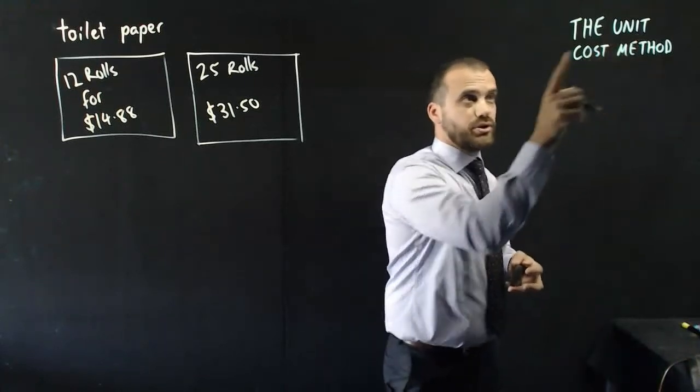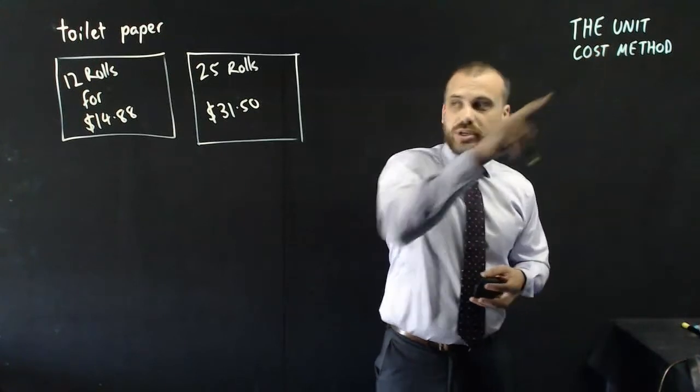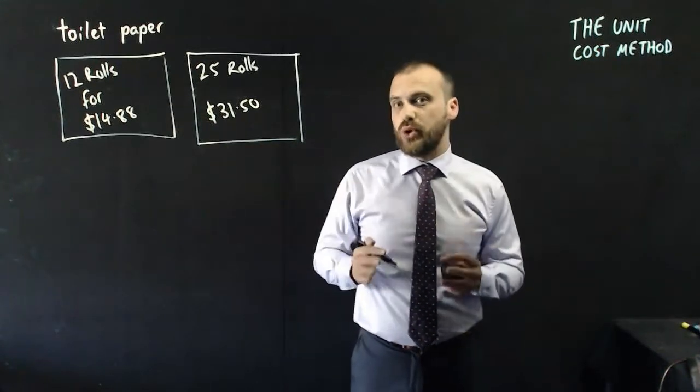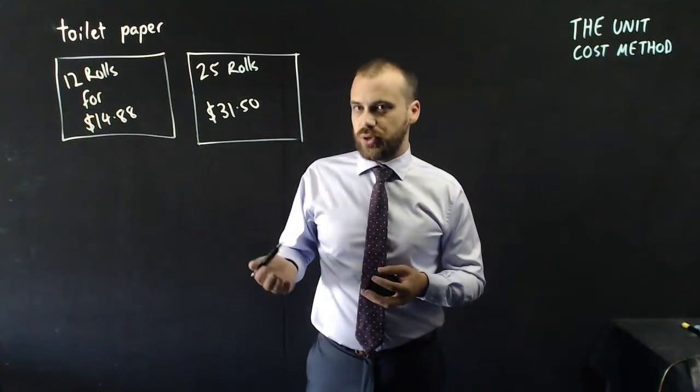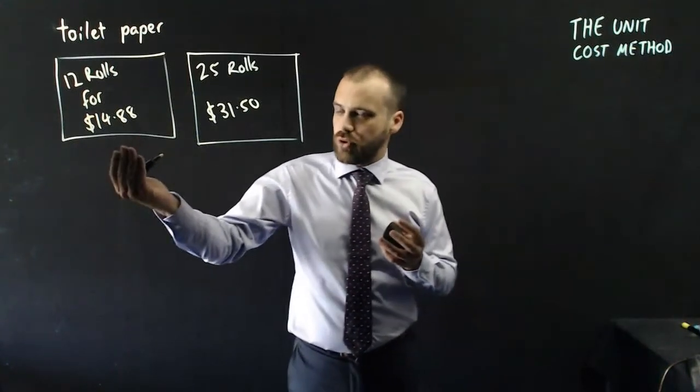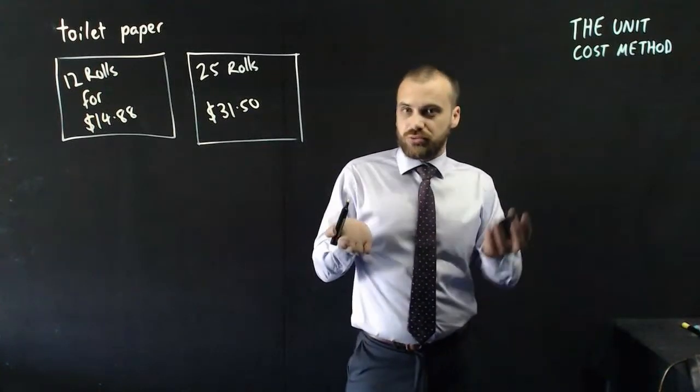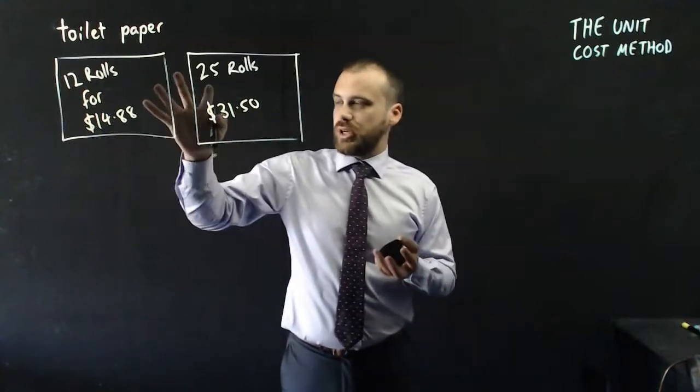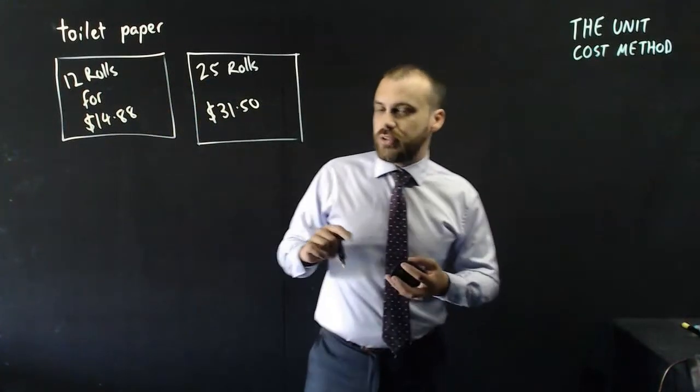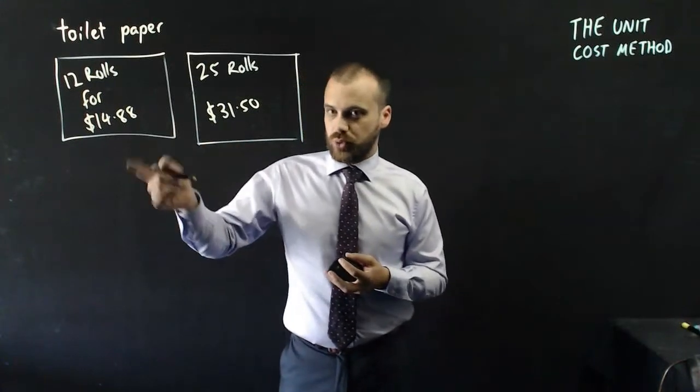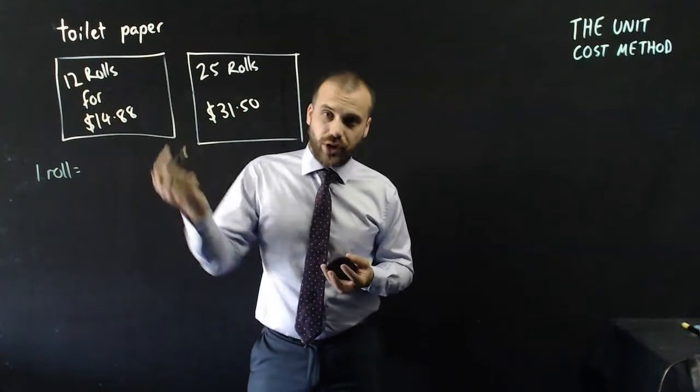Now, it's called the unit cost method because it figures out what one unit of stuff is worth. In other words, what one roll of toilet paper is worth. And then if you know what one roll of this toilet paper is, and you know what one roll of this toilet paper is, you can then directly compare them. We can't directly compare these because this is 12 rolls and this is 25 rolls. So let's figure out what one roll of toilet paper costs.